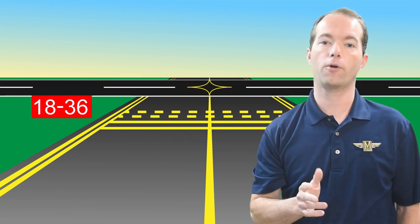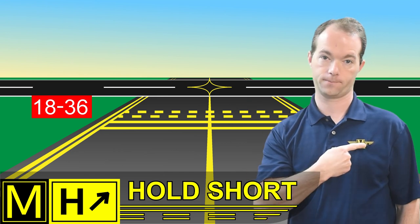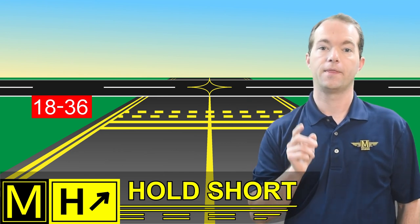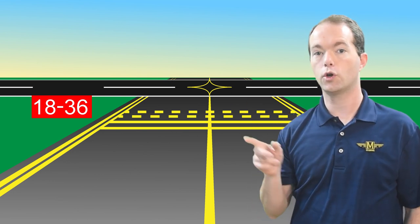The most important pavement marking you're going to need to know is probably the one that's in my logo: the hold short line. This is double solid on the taxiway side and double dashed on the runway side. Just like on the highway, you can cross when the dashes are on your side. These lines denote the entrance to a runway, and you may not cross these hold short lines unless you're given clearance at a towered airport, or at least look for traffic and announce your intentions and position at an untowered airport.